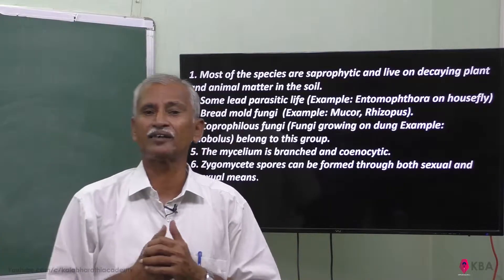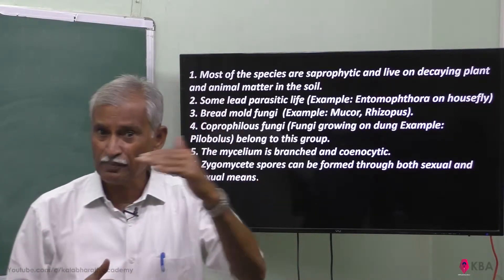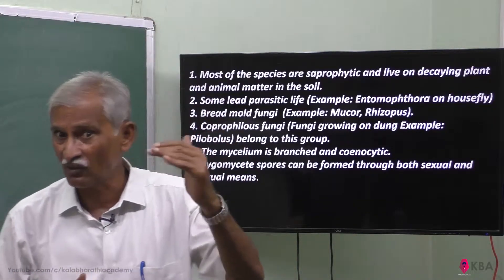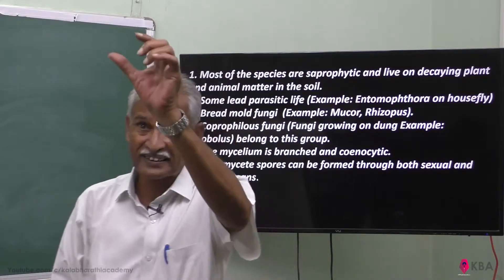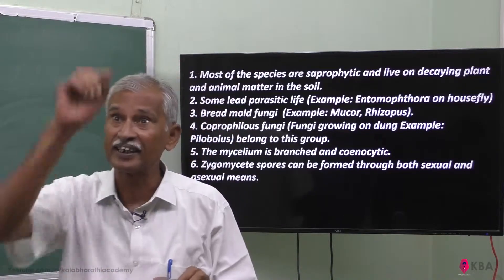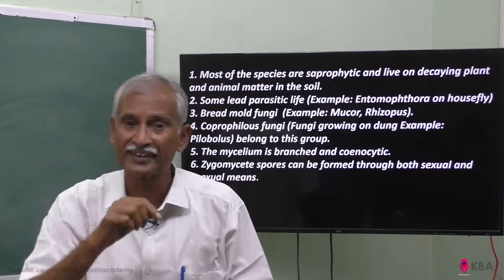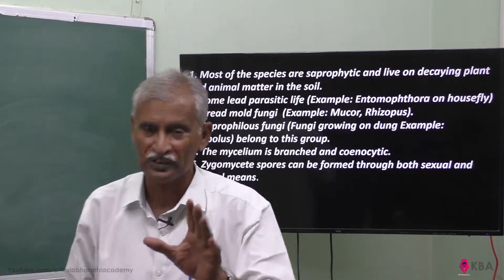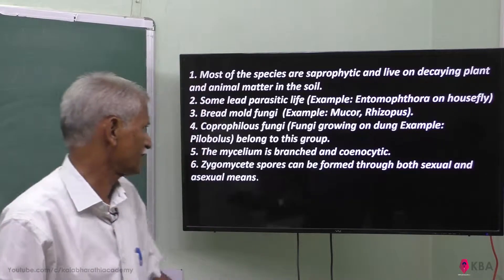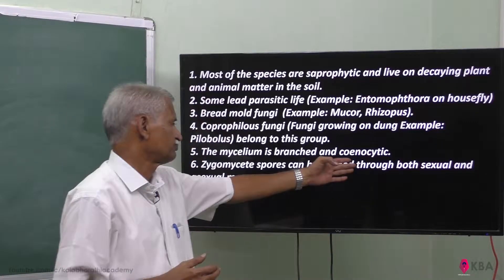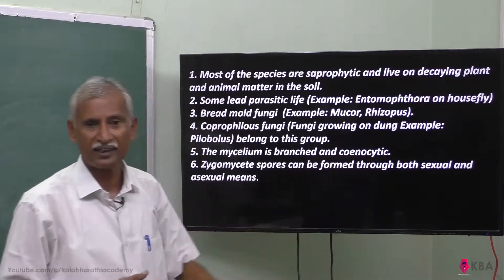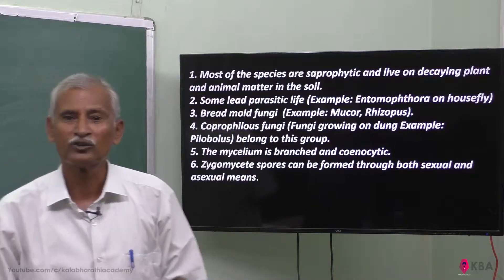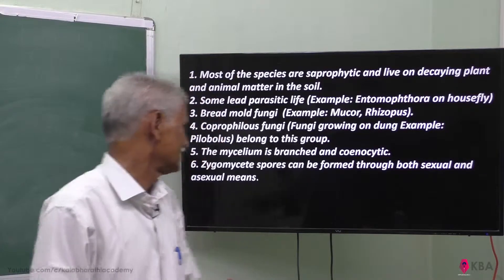Septa is absent. Because septa are absent, it is a single cell with many nuclei inside, and so it is called coenocytic.